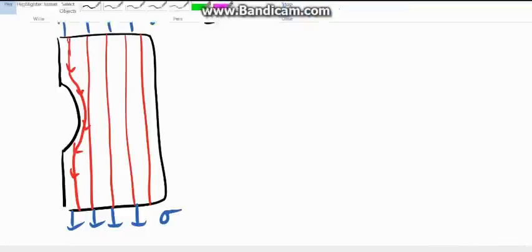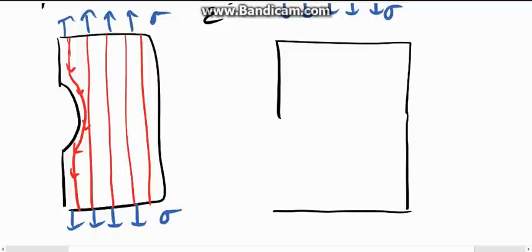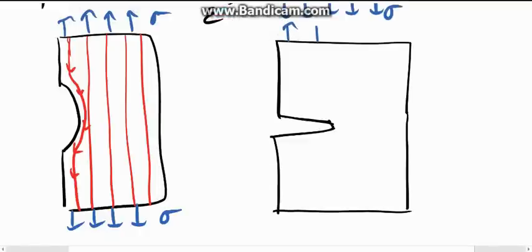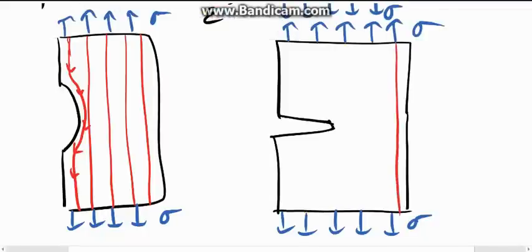Now, if we look at an even more extreme case where our notch, instead of being nice and shallow, is very sharp, we will have something very similar. If we load it up with a uniform stress, we will see that the flow around that notch, that new extreme notch, is exacerbated.